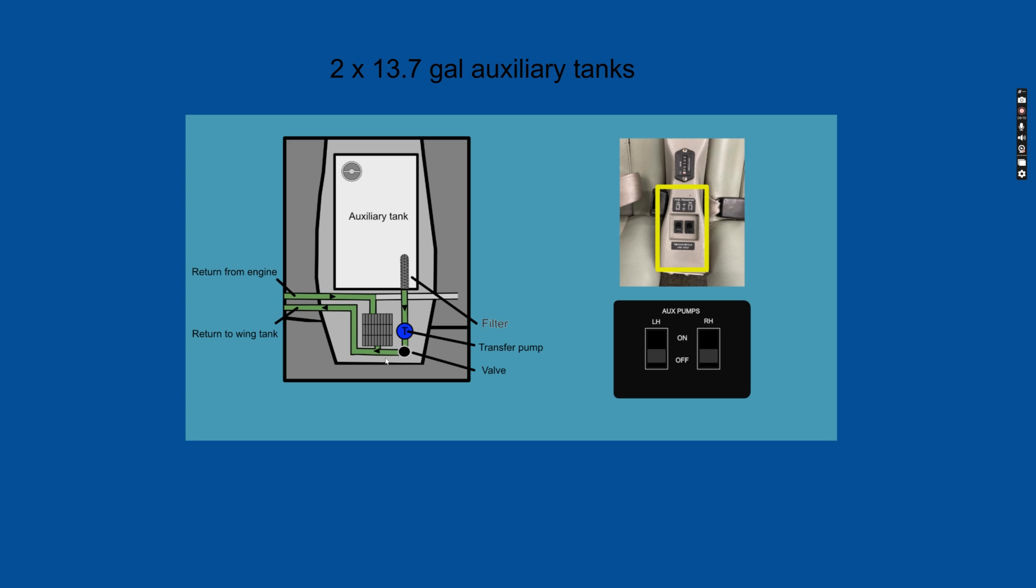The fuel that's pulled from the aux tank joins the return fuel coming back from the engine, and then goes back to the wing tank. So here you have the return fuel, the heated return fuel from the engine goes into the fuel cooler, gets cooled, and then here is the fuel being pulled out of the aux tank via the pump, and they meet up here, and then all that fuel goes back to the wing tank on that side.